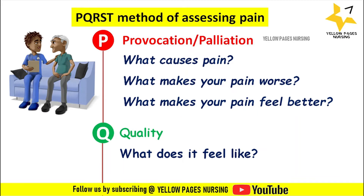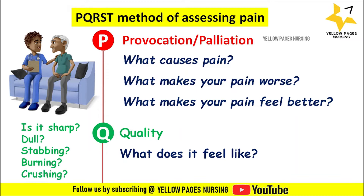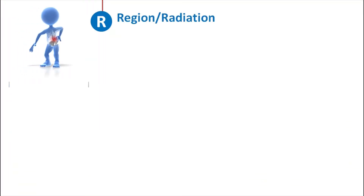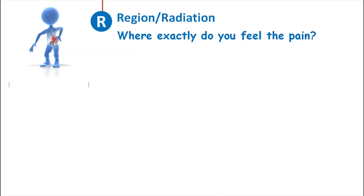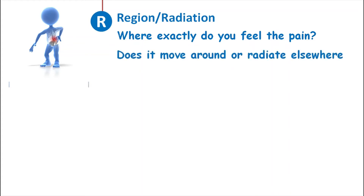Q is for Quality — what does the pain feel like? Here we describe the characteristics of pain: whether it is sharp, dull, stabbing, burning, or crushing. R is for Region or Radiation — where exactly does the patient feel the pain? The nurse identifies and documents the location of pain and asks whether it moves around or radiates elsewhere from one place to another.